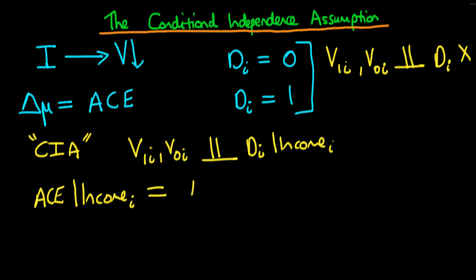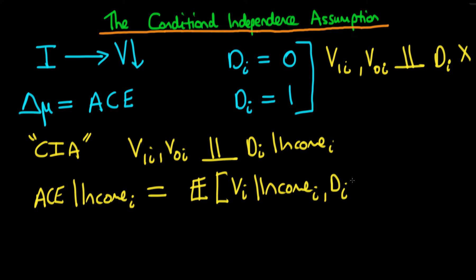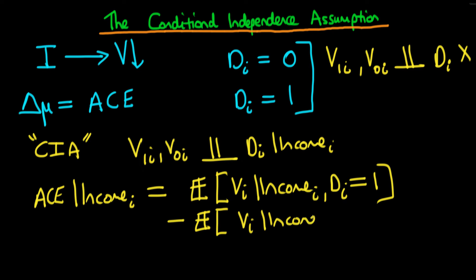Essentially, that is the expectation of VI given the level of income in that particular state — if we think income is perhaps the only variable which matters in this context, which it's probably not, but just to keep things simple. And given that DI is equal to 1, we then subtract the expectation of VI given a state's level of income and given that DI is equal to 0. So that's pretty similar to the basic difference in means, the difference being that I've included this condition on income as well.